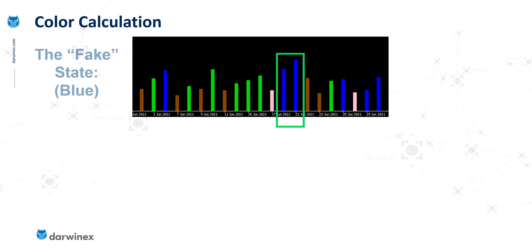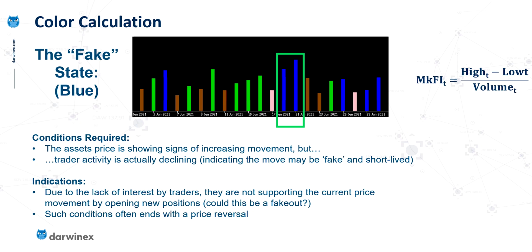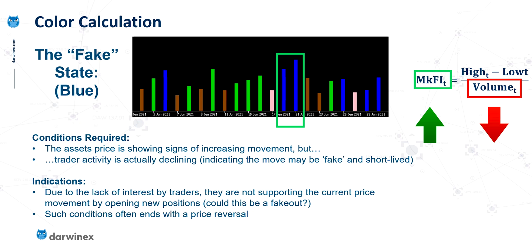Then onto the blue state, or the fake state. Here we're looking for a difference in opinion between the Market Facilitation Index and the volume. If the indicator value has gone up while the volume went down, this provides the necessary conditions to classify this bar as fake. In other words, we're seeing increasing movement given by the indicator's value, but the volume that sits behind it is actually very low — and as we've seen in our analysis of volume previously, that means this particular price move can't be trusted and is likely to be short-lived and fake.